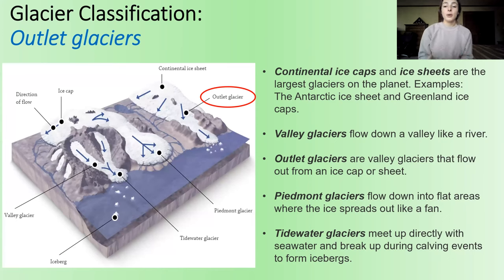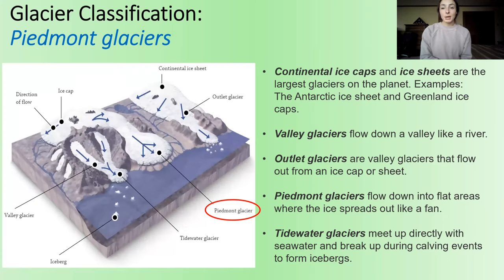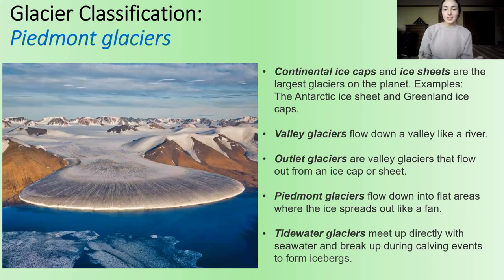Next, we have outlet glaciers, which represent glaciers that flow out of an ice cap or ice sheet as valley glaciers, kind of like the one seen in this picture. Then we have Piedmont glaciers, which form a fan-like structure once they reach a flat lowland area. You can tell the fan morphology they have, similar to alluvial fans and submarine fans — any kind of flow that flows down into an open lowland area. It just happens a lot slower.